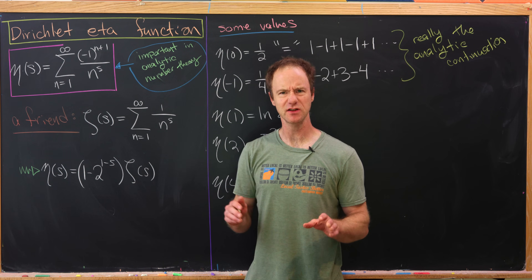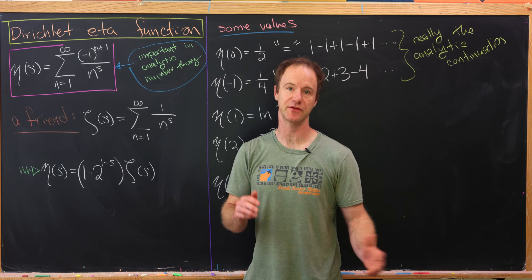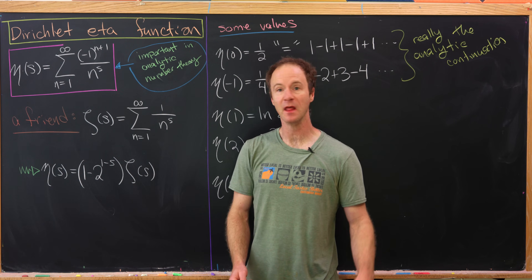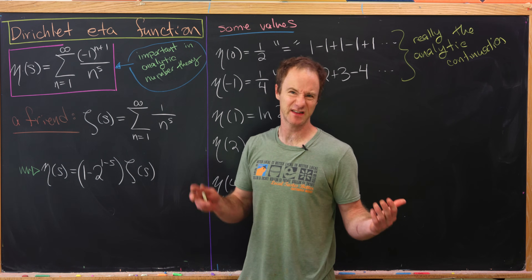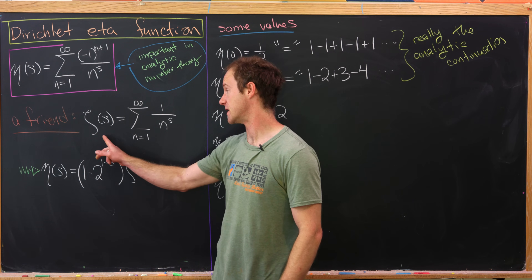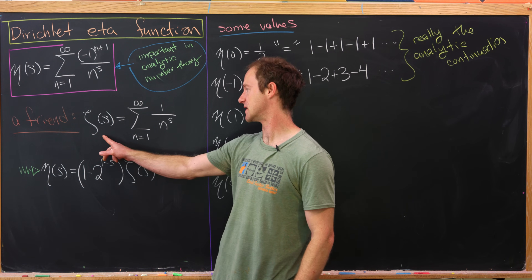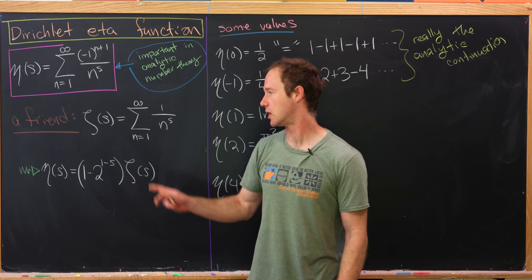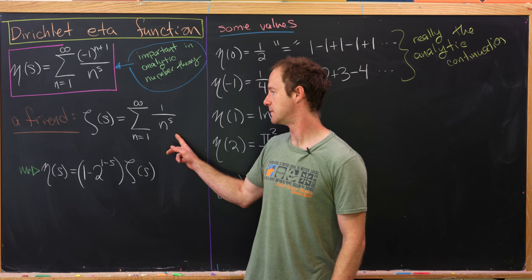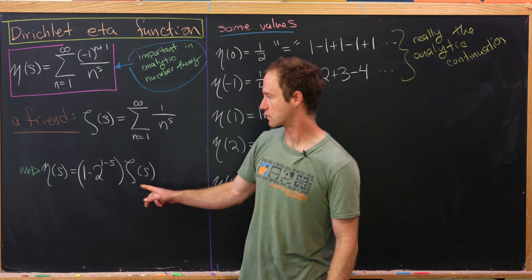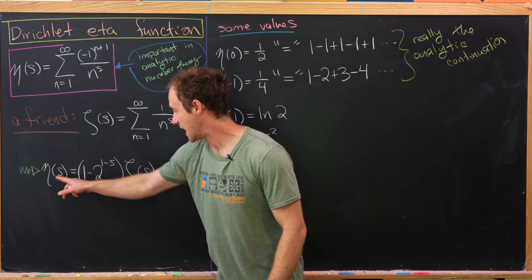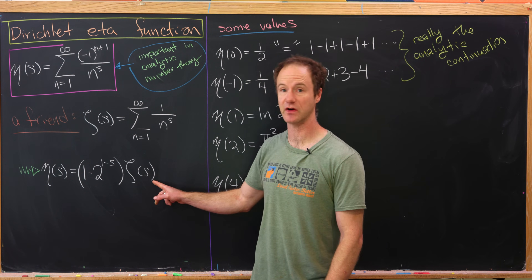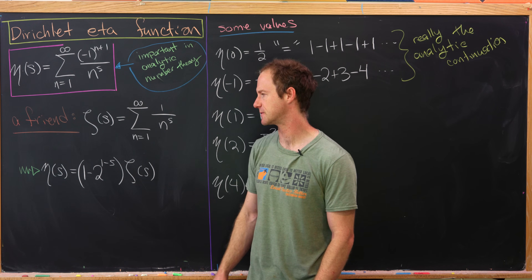This looks kind of like an alternating version of the famous Riemann zeta function. And in fact, this is like what I'll call a friend to the Riemann zeta function, which is the same thing without the alternating bit. But given that, we can write the eta function in terms of the zeta function.